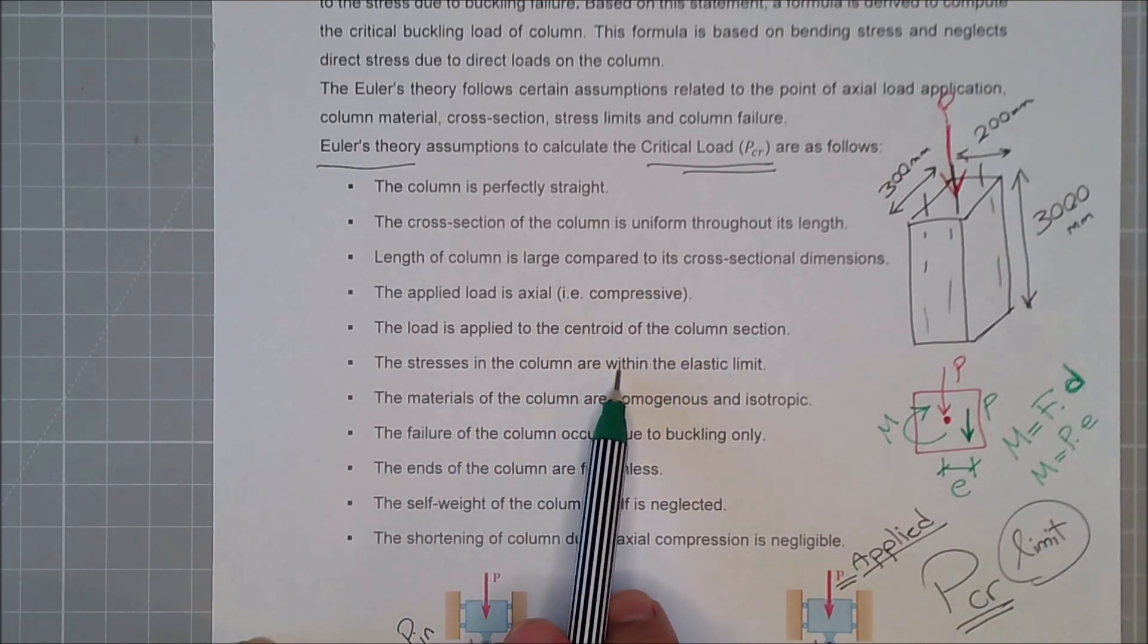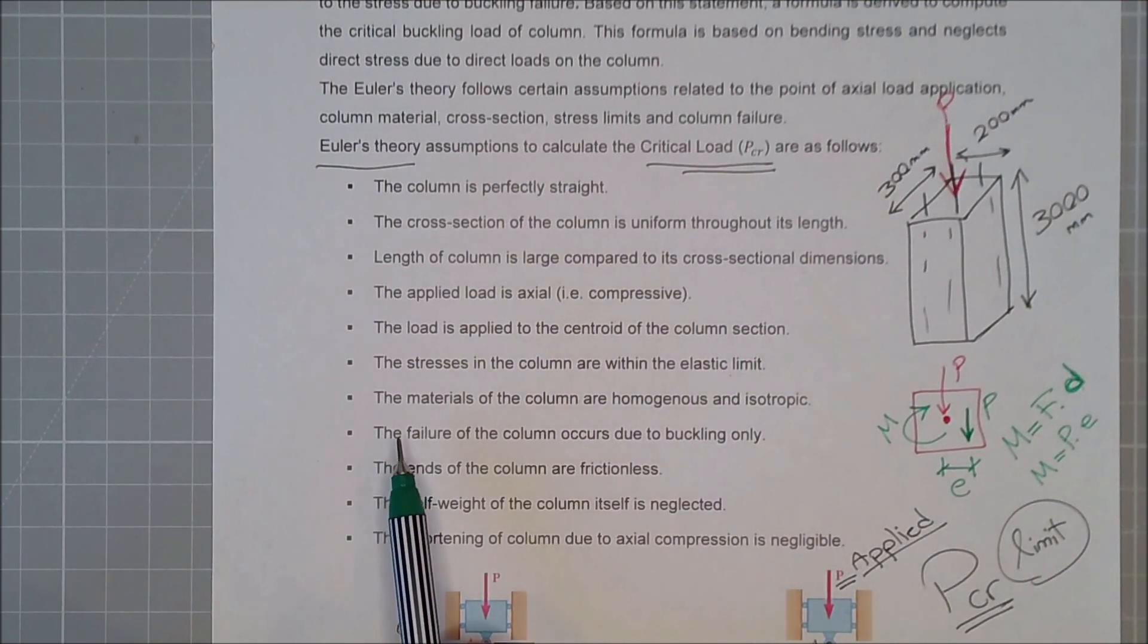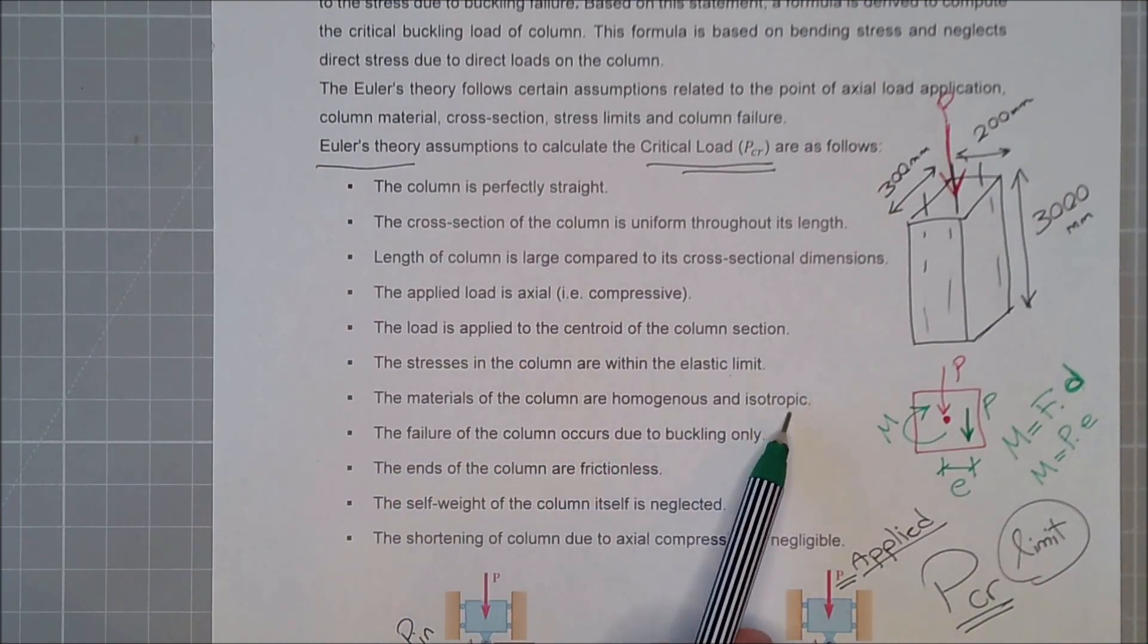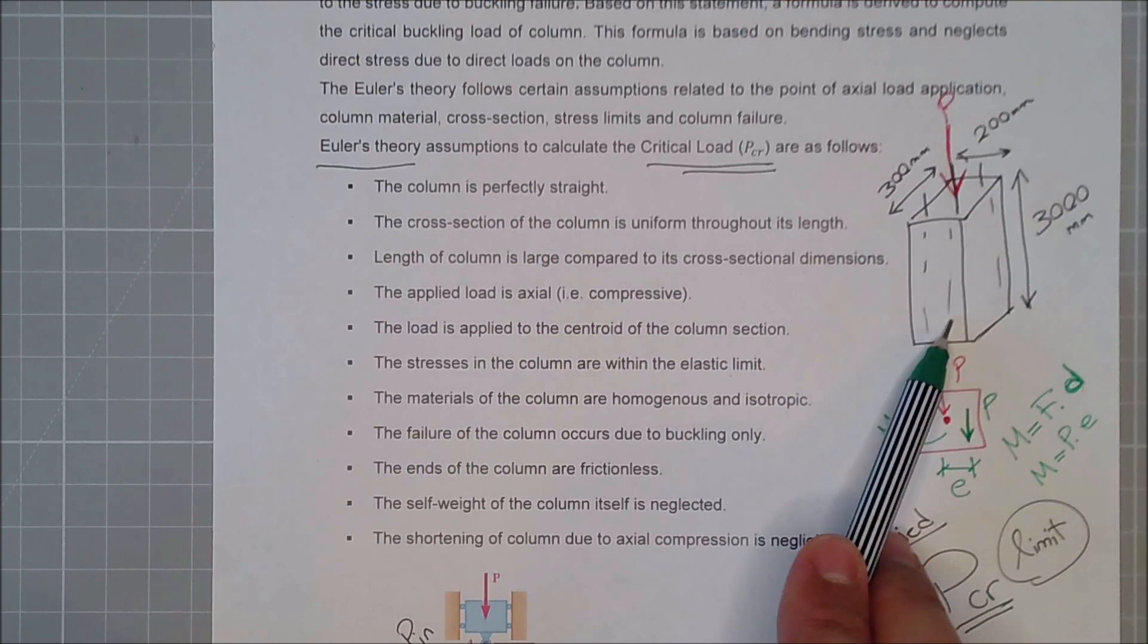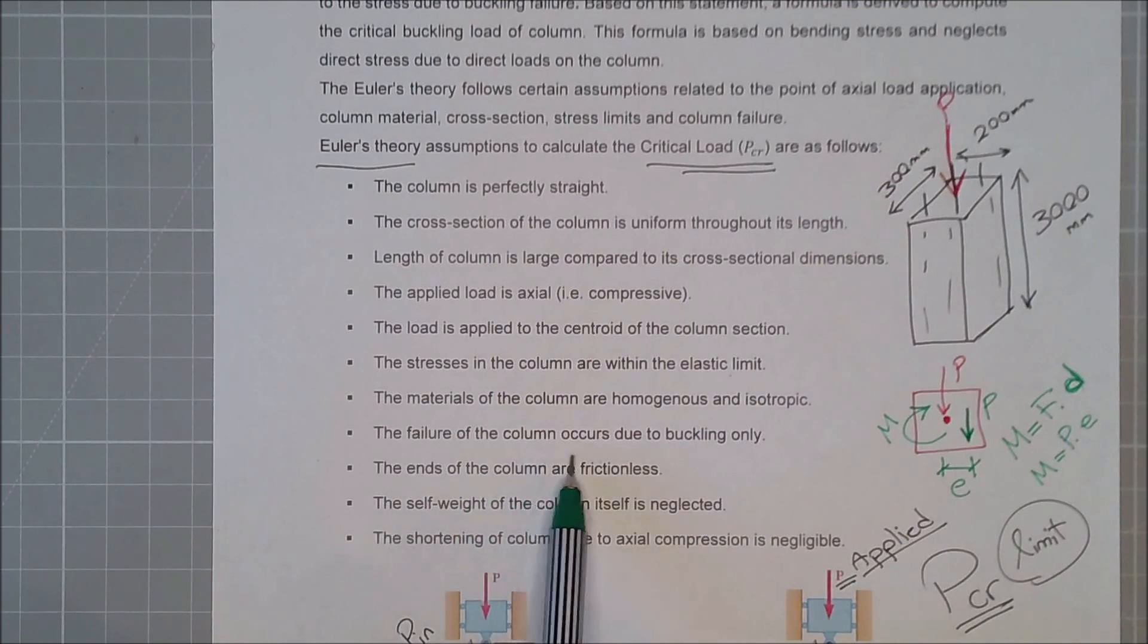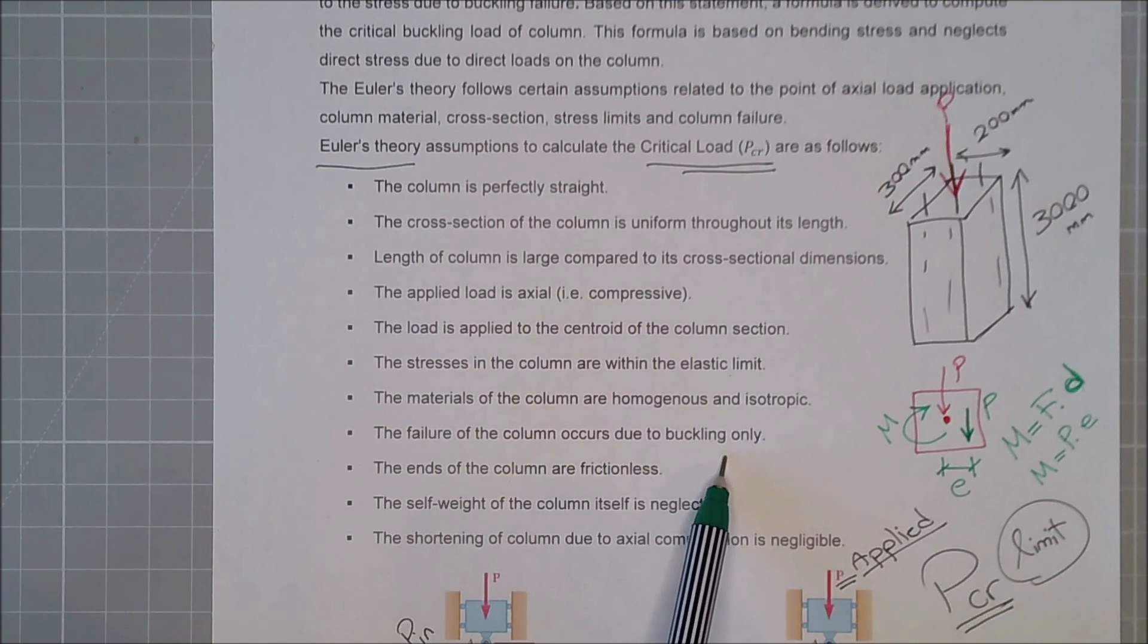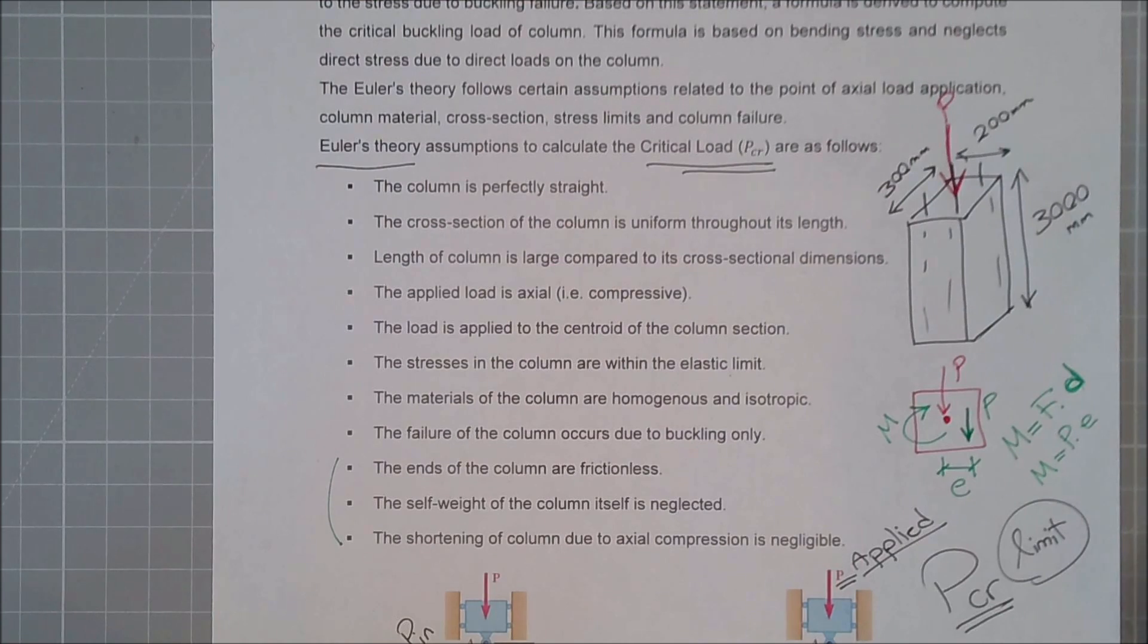The stress in the column are within the elastic limit. For sure, we have not reached the yielding point and we have not moved to the plastic state. The material of the column are homogeneous and isotropic. The same thing that the cross-section is always the same, the material is always the same. Suddenly, I don't change to like a metal or a steel in the middle of here. The failure of the column occurs due to buckling only. Yes, we are not doing any yielding. The end of the columns are frictionless. The self-weight of the column itself is neglected. And the shortening of columns due to axial compression is neglected. These are all related to imperfection. And as always, we neglect them in the general formulation of the theory.